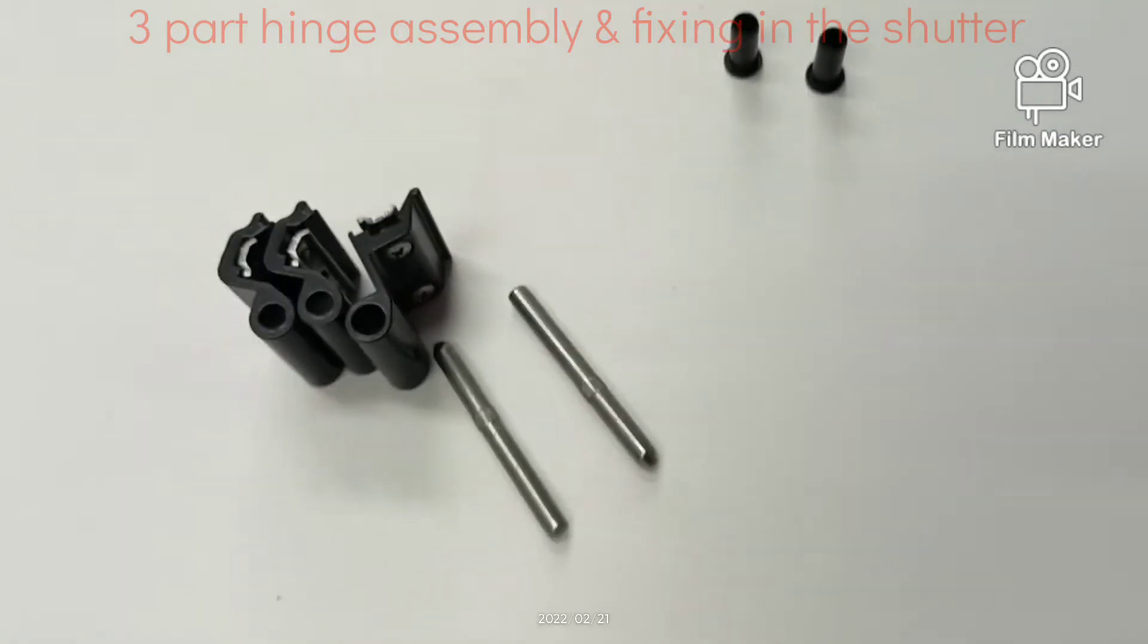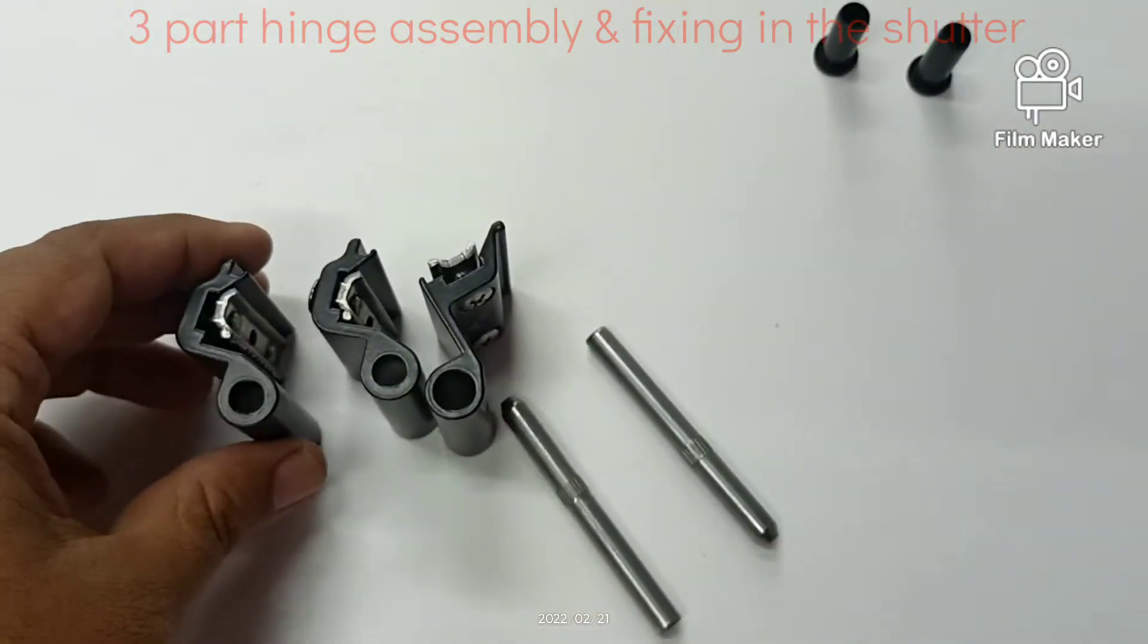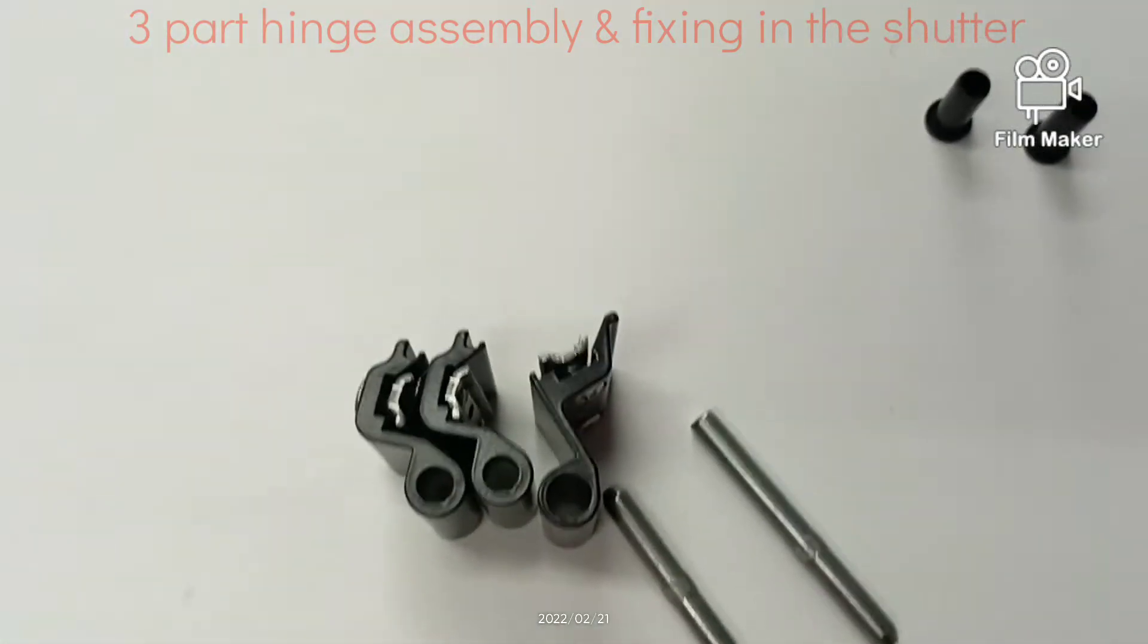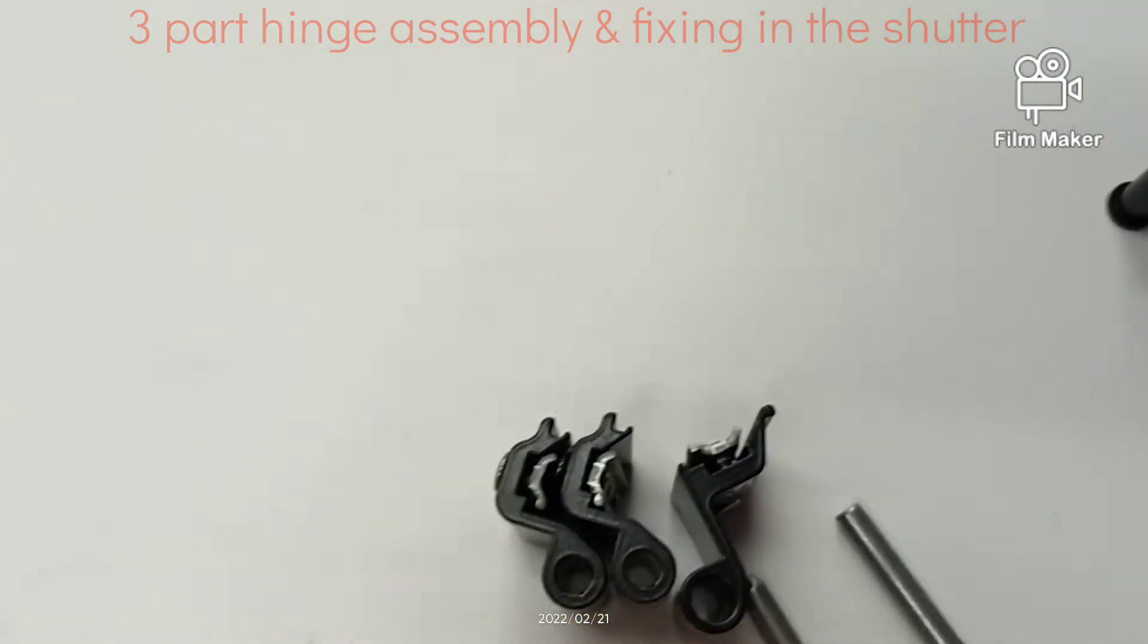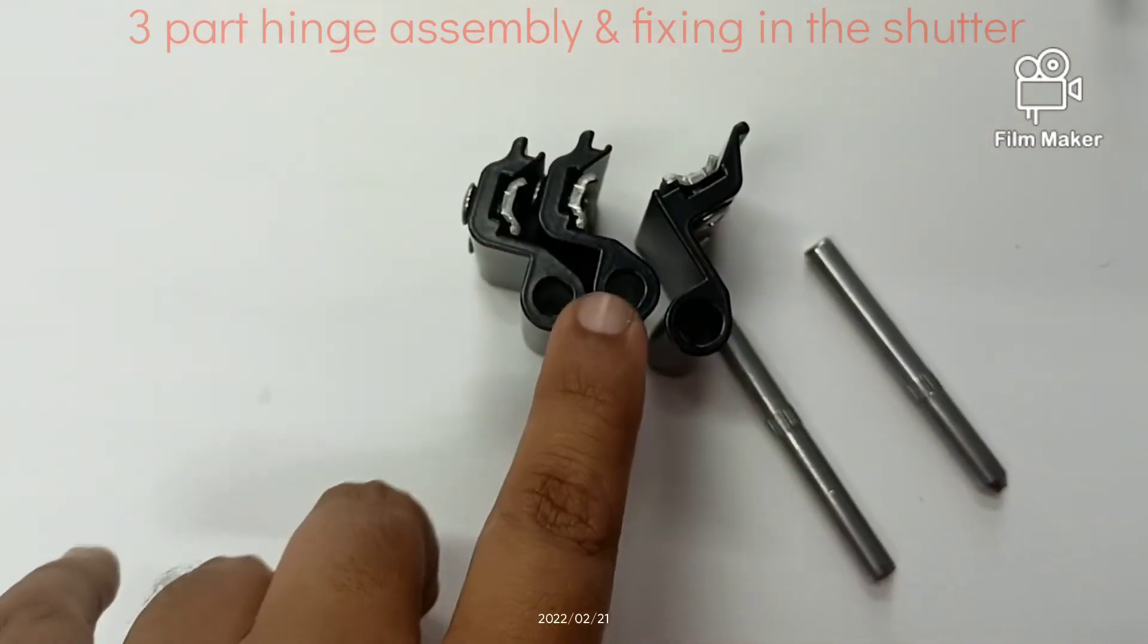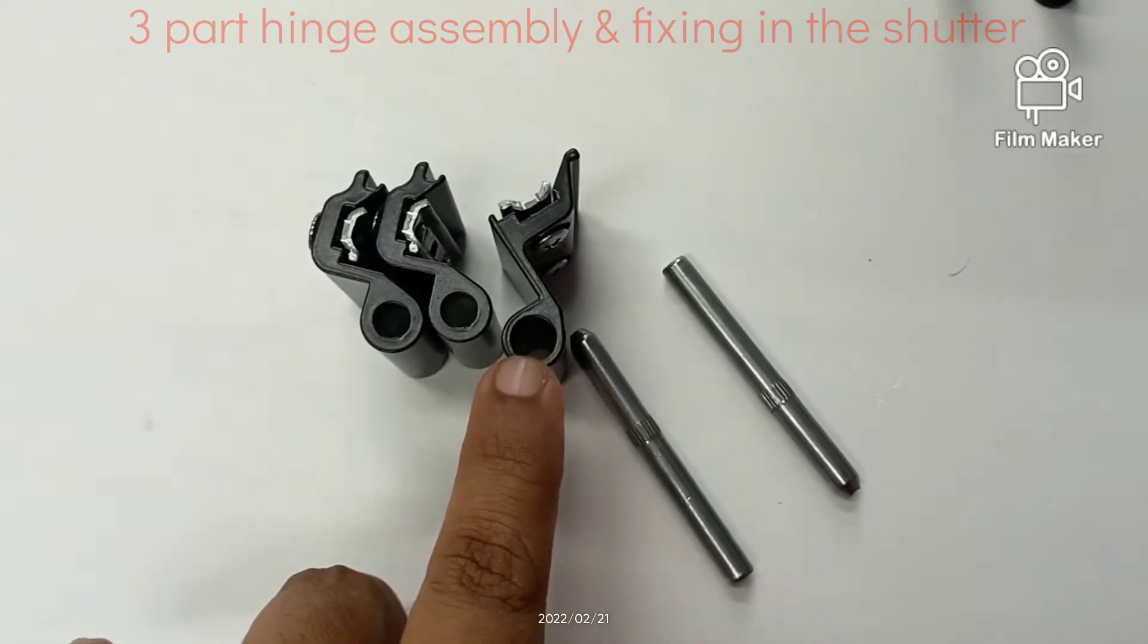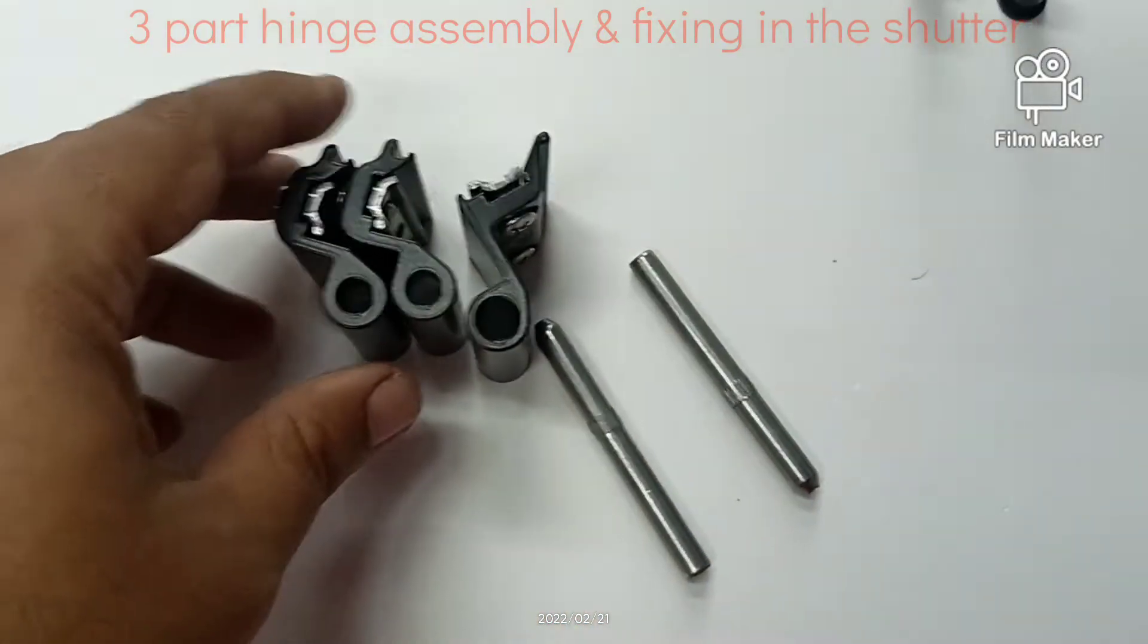Hello, today we are going to discuss how to assemble the three-part hinge of Cadwell. After opening the packet, you will receive these two parts which are going to be used in the sash frame, and this part is going to be used or applied in the outer frame. Now I will show you how it is assembled.